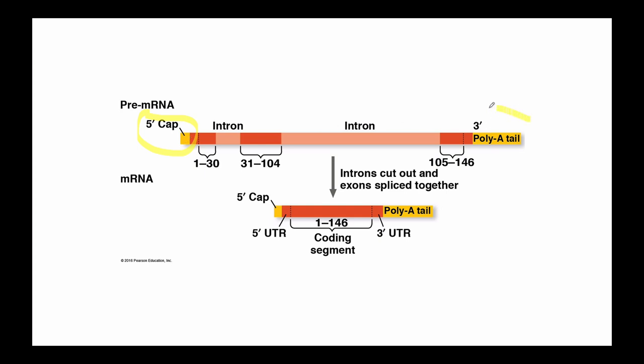Another thing over here is called the poly-A tail. A length of adenine nucleotides are added to the end. So why is that added? Well, let's take a look back out.